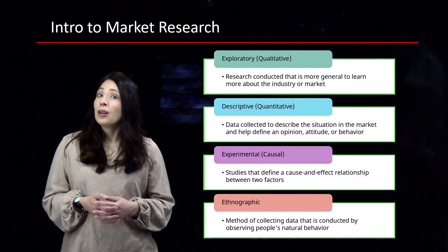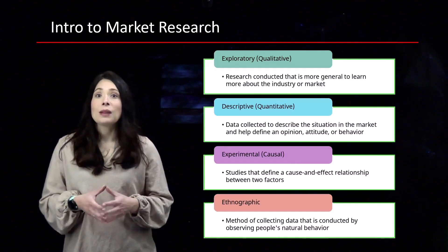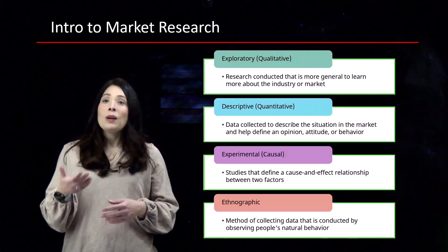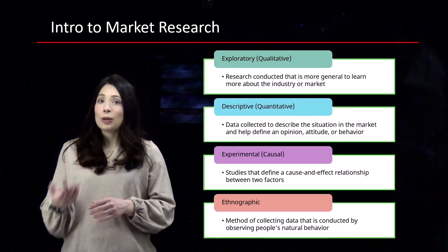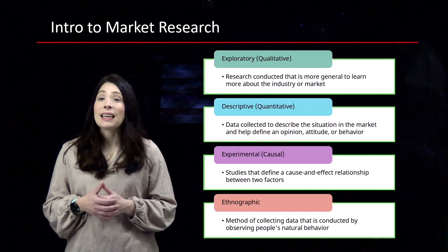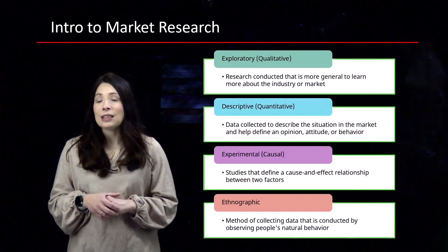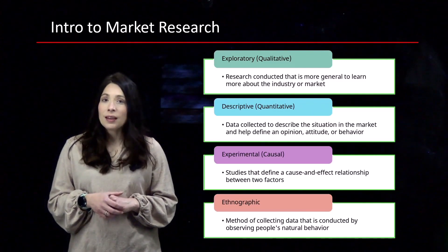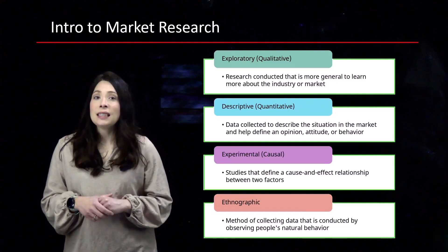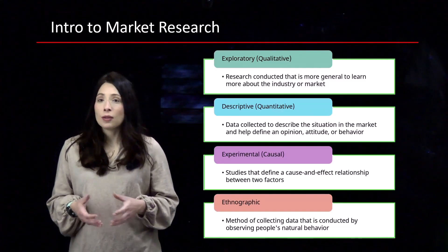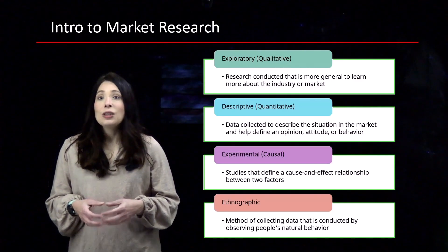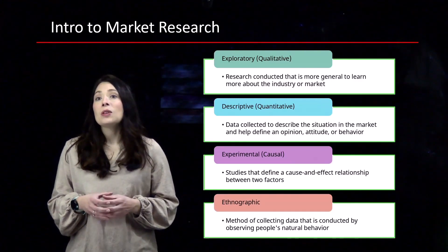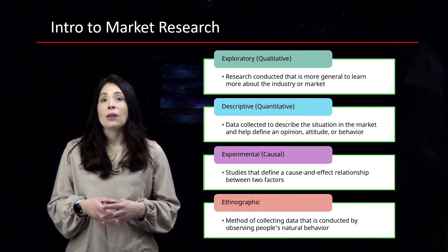Experimental or causal is the cause and effect relationship between two factors. This is a study that may decide if we do A what occurs if we do B, so we call it A-B testing, and you'll learn more about it in the Caesars example included in the module. Ethnographic data is a method of collecting data that is conducted by observation, so a secret shopper example, or watching consumers and how they interact within your retail location.